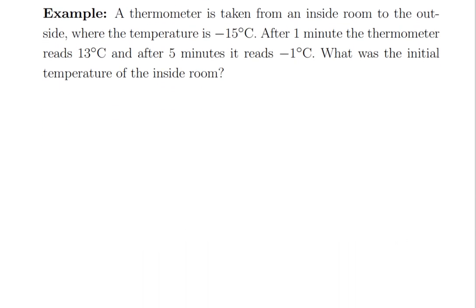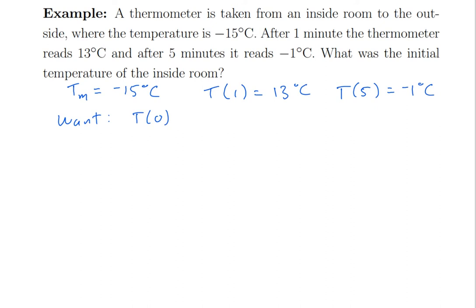So that's what we'll do in this next example. A thermometer is taken from an inside room to the outside. Outside, the temperature is negative 15 Celsius — it must be in Canada or somewhere. After one minute the thermometer reads 13, and after five minutes it reads minus one. What was the initial temperature of the inside room? There's a little twist here because they're not telling us the initial temperature. They're telling us the ambient temperature (−15), the temperature after one minute (13), and the temperature after five minutes (−1), and we want T(0).